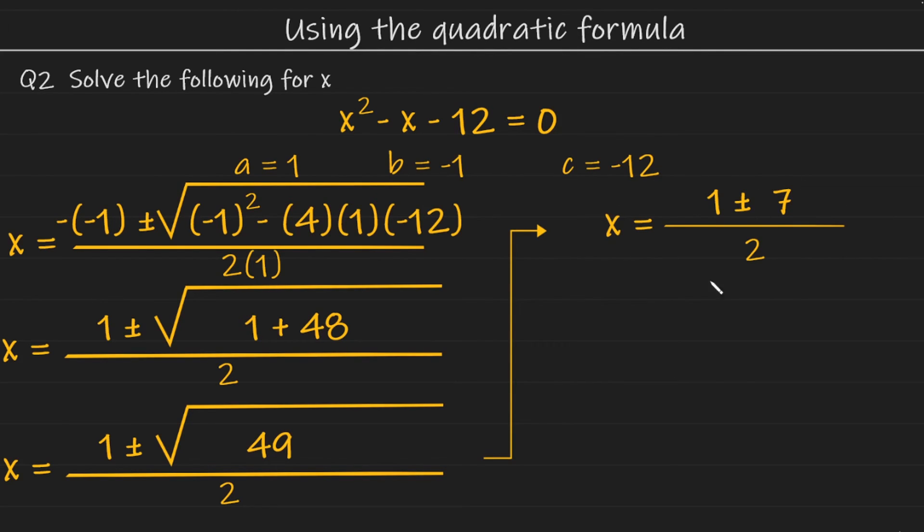So this now leaves us with x is equal to 1 plus or minus 7 all over 2. And again, at this stage, we break it up into two separate equations, one with the plus component and the other with the minus component. And that looks like this.